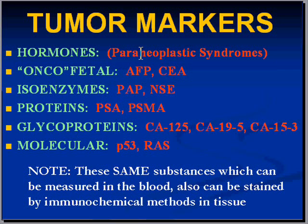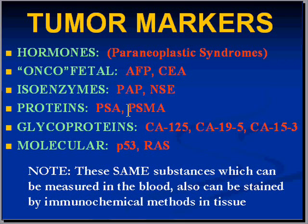What these tumor markers are very valuable for is following up on therapy. For example, if somebody has had prostate cancer and their PSA levels have been consistently low after surgery, radiation, or chemo, and all of a sudden there's a significant rise, that might indicate that the tumor has recurred — even if there is no other anatomic evidence by usual diagnostic or radiologic modalities.